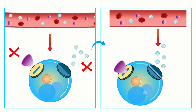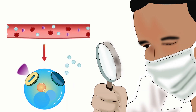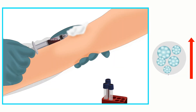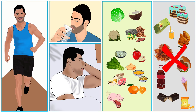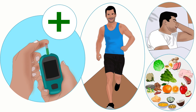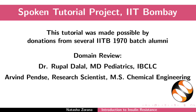We must therefore correct insulin resistance, as it is the root cause of type 2 diabetes. A higher glucose level is just a symptom of diabetes. Lifestyle changes are important to correct insulin resistance. How to improve insulin sensitivity is explained in another tutorial. This brings us to the end of this tutorial. Thank you for joining.